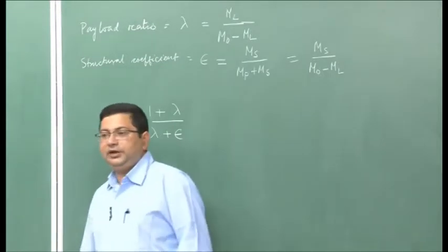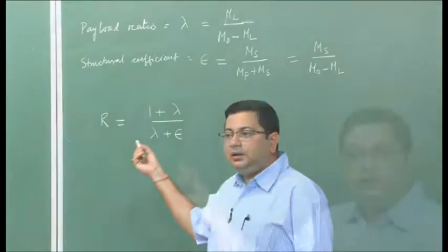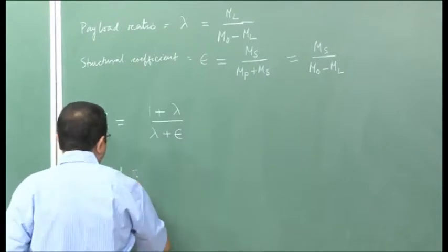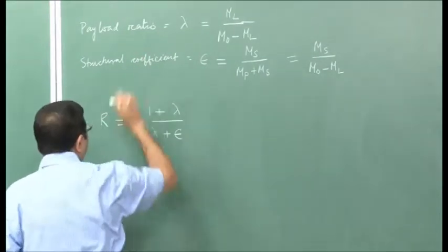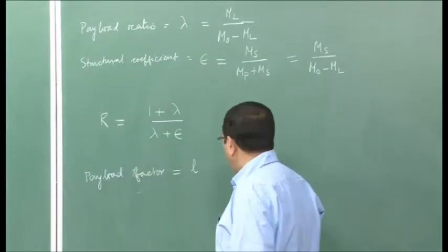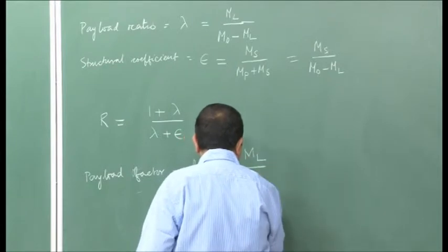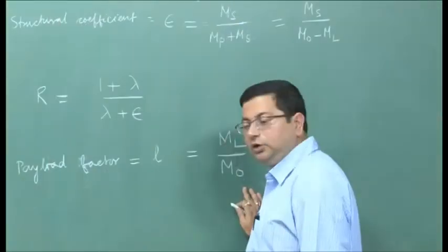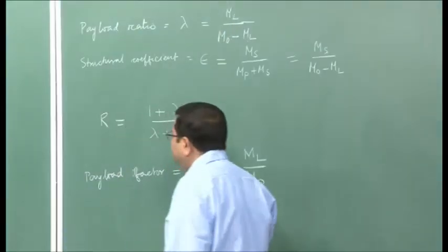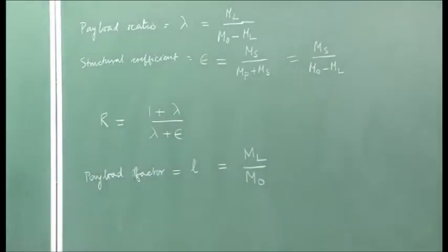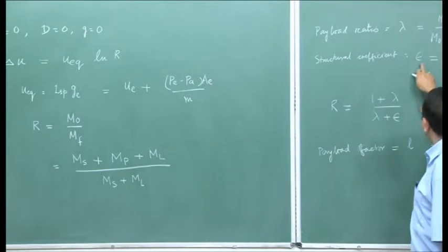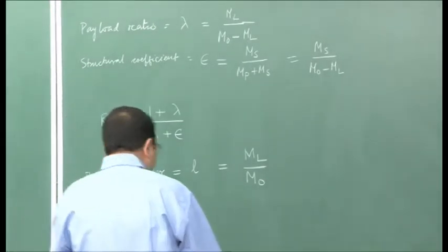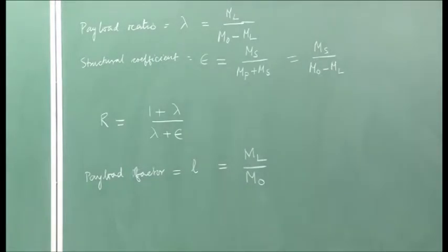Before proceeding further, let me define another non-dimensional parameter: the payload factor, given by l, defined as the mass of the payload divided by the total mass of the vehicle. So l equals m_l upon m_naught. Now, let us get a relationship for r, l, and epsilon, because this is something we will be using for multistage rockets. Let us try to get an expression involving these three.